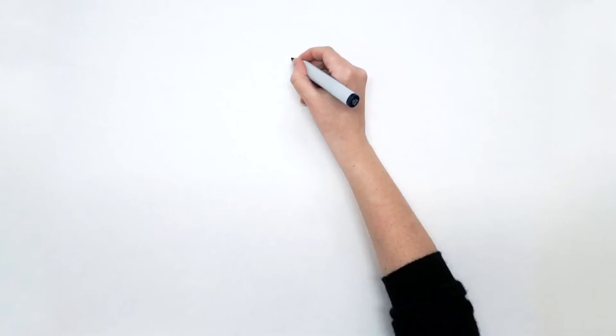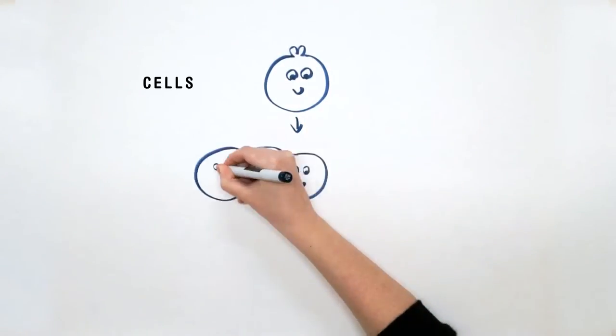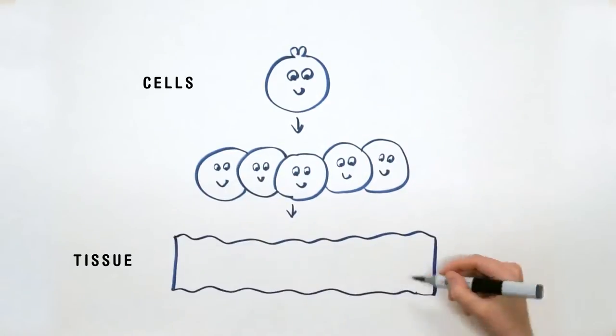Wait what? Going all the way back, we are made up of cells. Cells make tissues, tissues make organs.